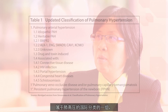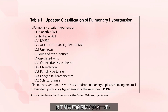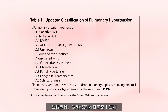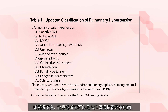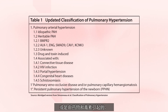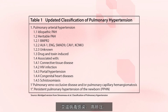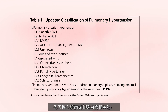PAH belongs to Group 1 of the PAH international classification. This Group 1, which is PAH, has several subgroups, such as idiopathic, in which case the cause is unknown, or it can be heritable, which means it can be inherited from parents, or due to drugs and toxins, or associated with certain conditions such as connective tissue disease, HIV infection, high liver pressure, congenital heart disease, or schistosomiasis.